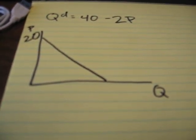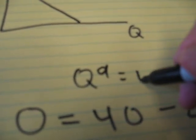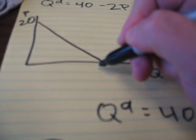When the price is zero, what's quantity demanded? So quantity demanded is equal to 40 minus 2 times zero, which is 40. That is the horizontal intercept.